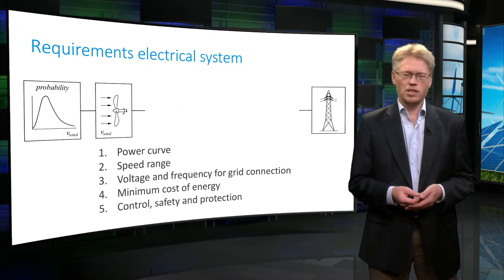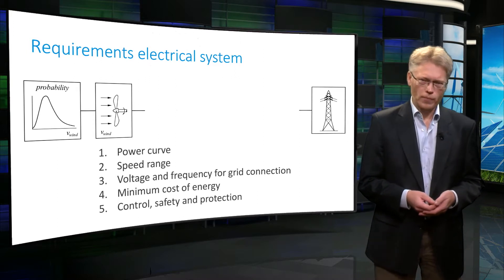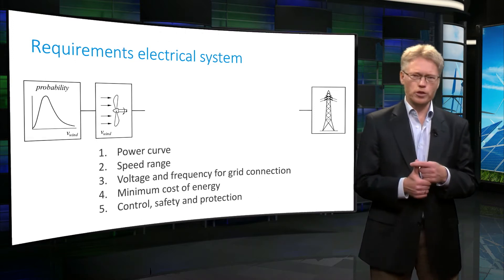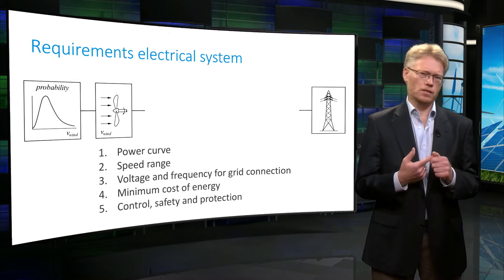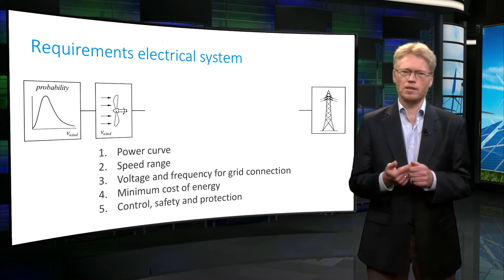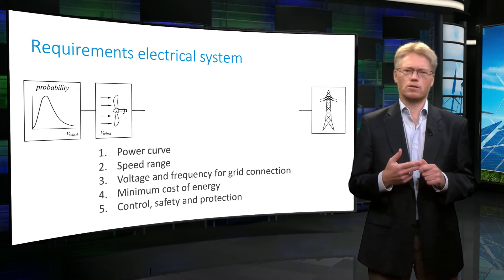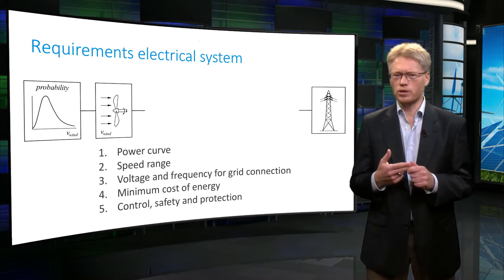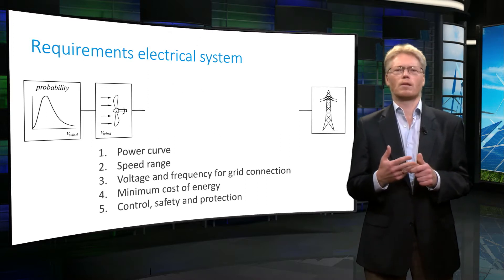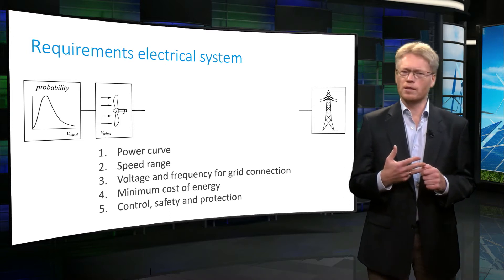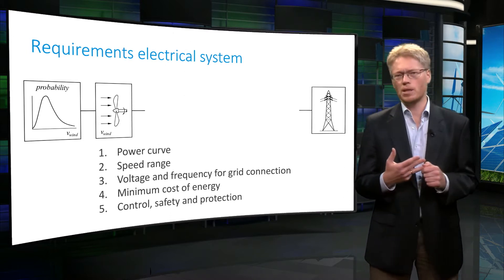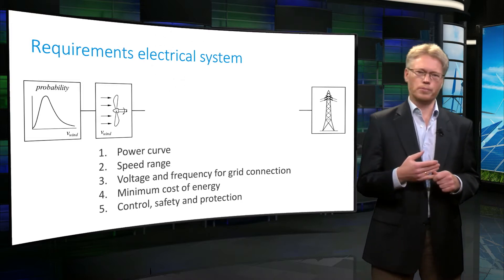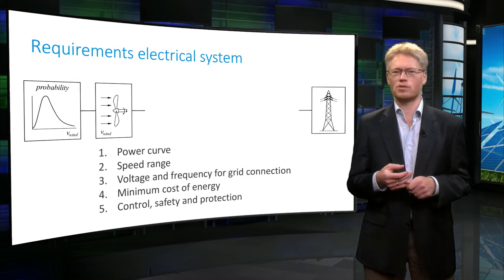What are the requirements of the electric system that makes this connection? First, the turbine has a power curve and that power must be converted into electrical power. Second, the system has to operate at a varying speed. Third, the power has to be supplied to the power system at a voltage and frequency of that power system. Fourth, this has to be done in a cost effective way, minimizing the cost of energy. Fifth, there are all kinds of control, protection and safety systems around this.